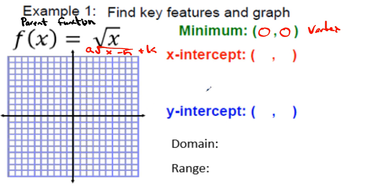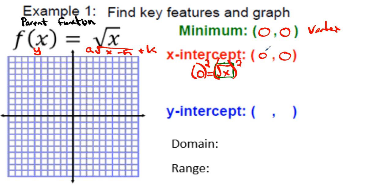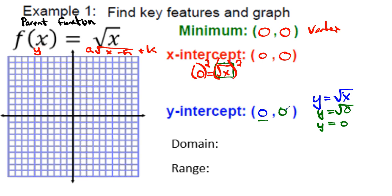For the x-intercept, plug in zero for y: 0 = √x, square both sides, and x = 0. For the y-intercept, plug in zero for x: y = √0 = 0. All three key points are the same at the origin, which is unique to the parent function. Let's make a table using perfect square x-values to graph it.